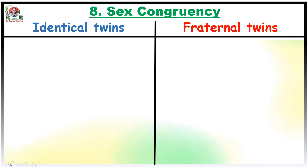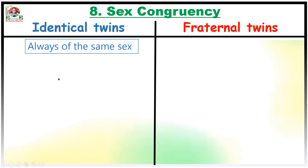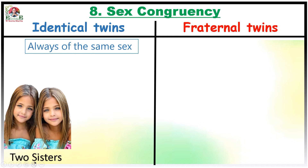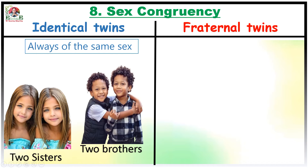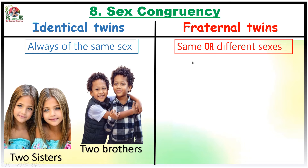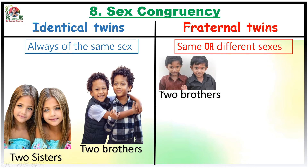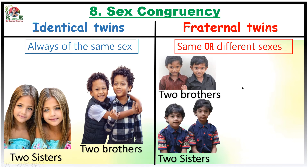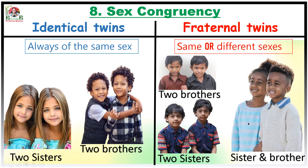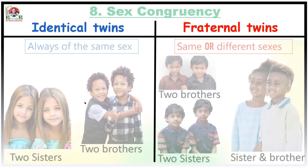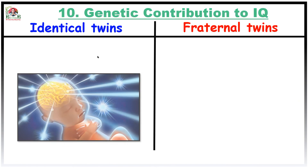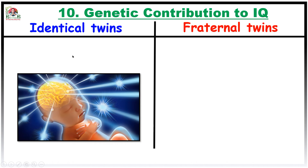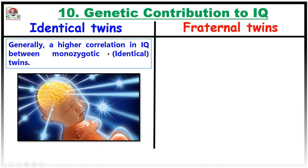The next point is about sex congruency. Identical twins are always of the same sex — either two sisters or two brothers. In contrast, fraternal twins can be of the same sex or different sexes: two brothers, two sisters, or even one sister and one brother.